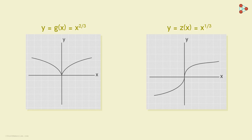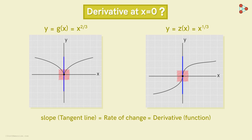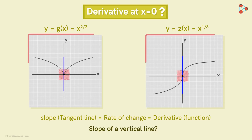Observe the graph of the functions near x equal to zero. If we want to draw a tangent line here, we would immediately draw a vertical line like this. But previously we've seen that the slope of a tangent line tells us the rate of change of a function — that is its derivative. So what's the derivative at x equal to zero here? Or indirectly, what's the slope of a vertical line? We can now understand these cases in this video. Let's start with this function.